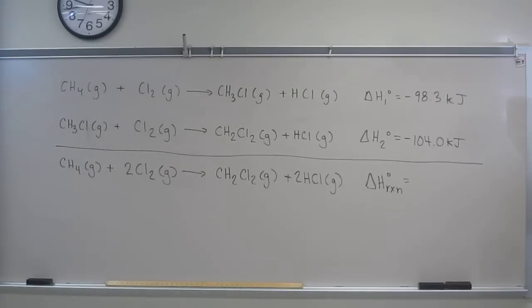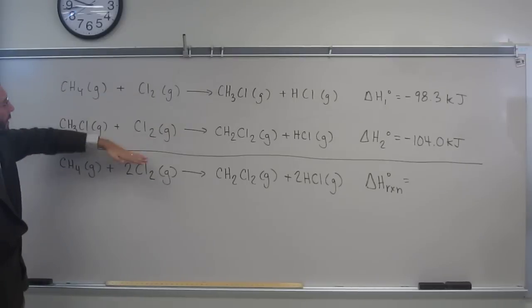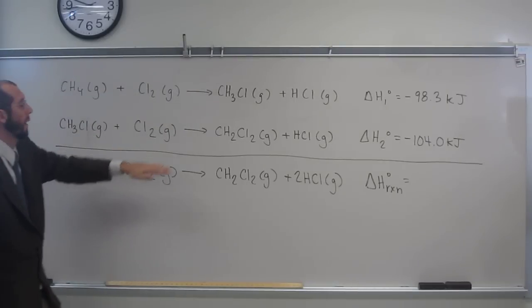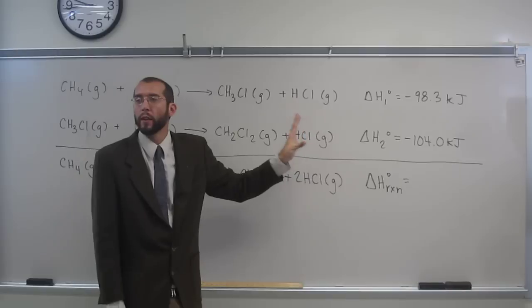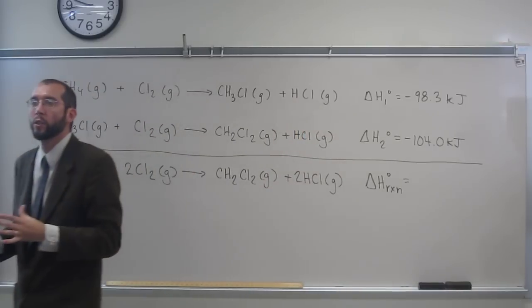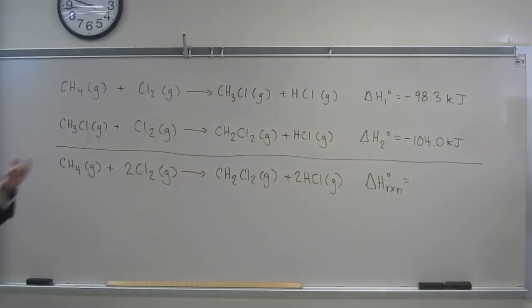So in this case, we just need to make sure that all the things that are here are represented here, and all the things that are here are represented here. If they're not, then we're going to have to do some rearranging of these equations, either turn them around, or multiply them by two, or whatnot. So let's just first go through it, cancel out the things that are on both sides of the equation.